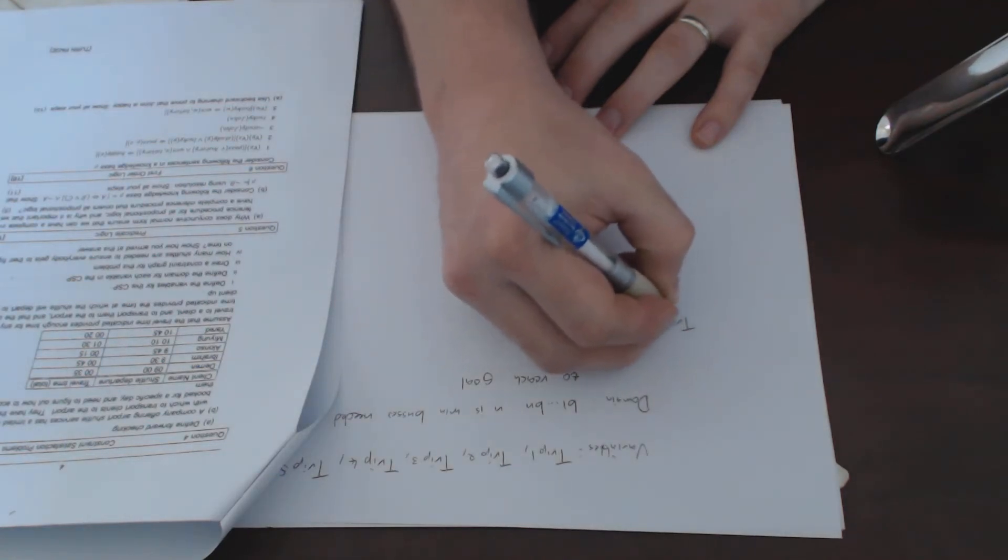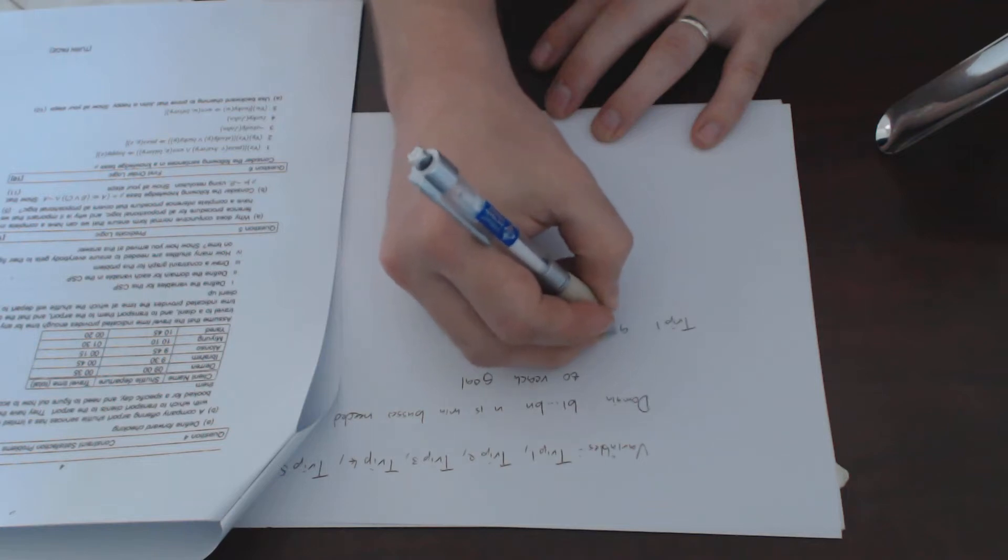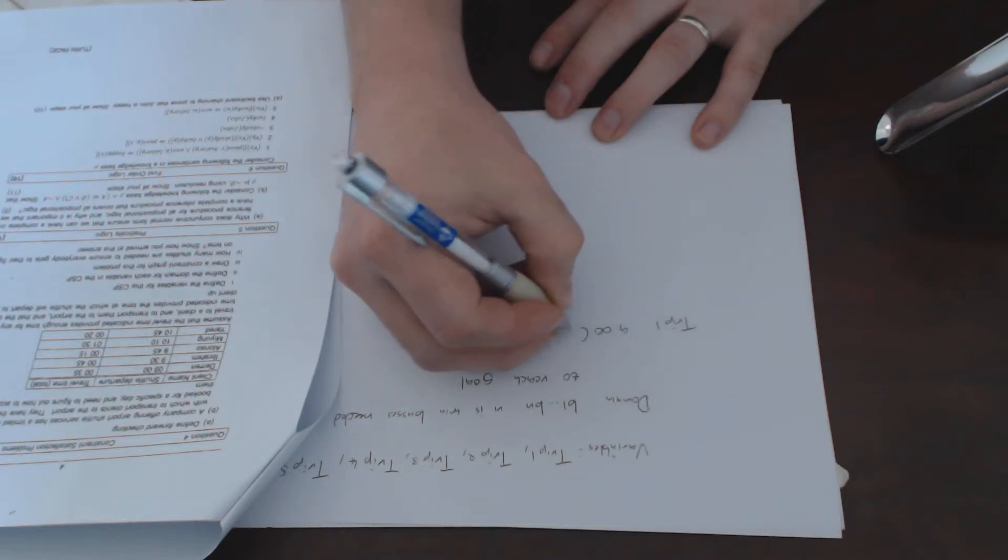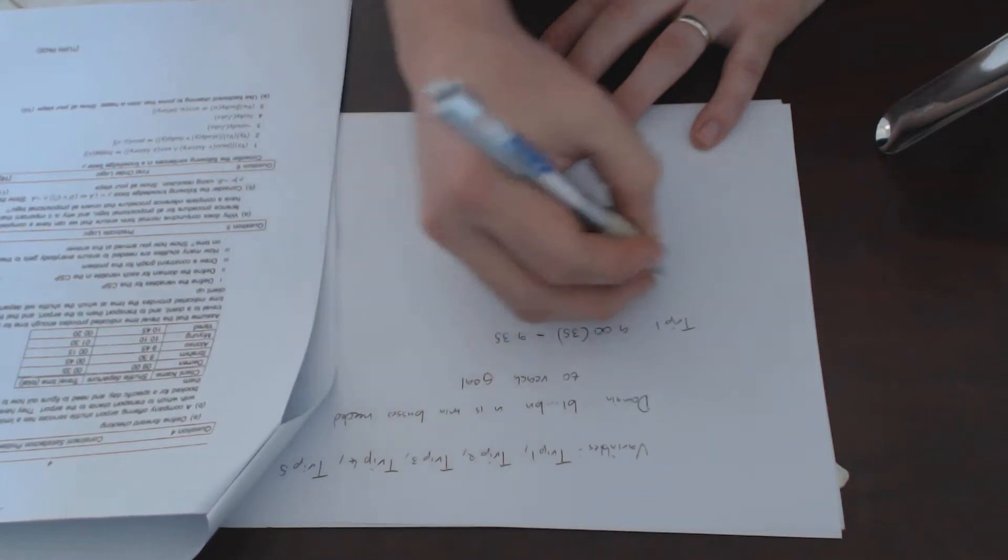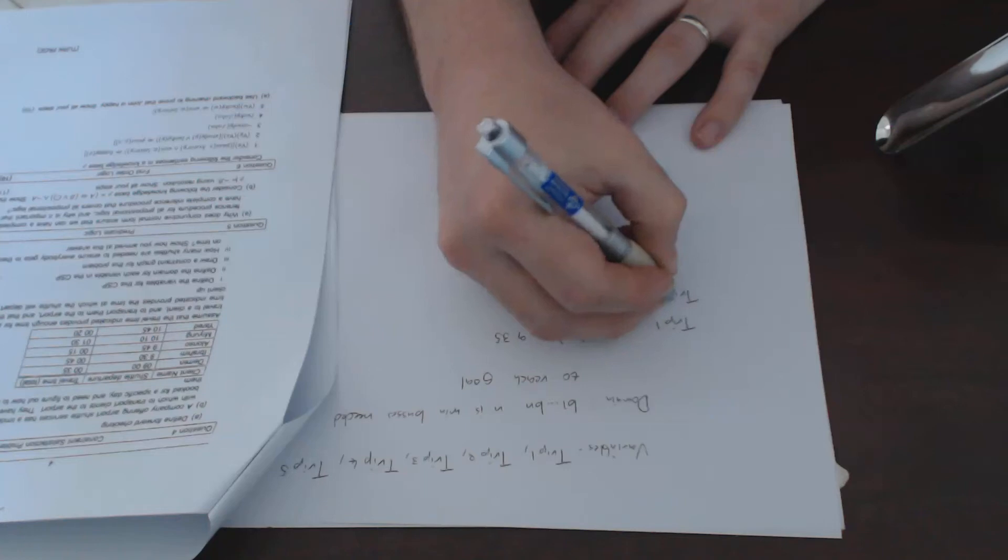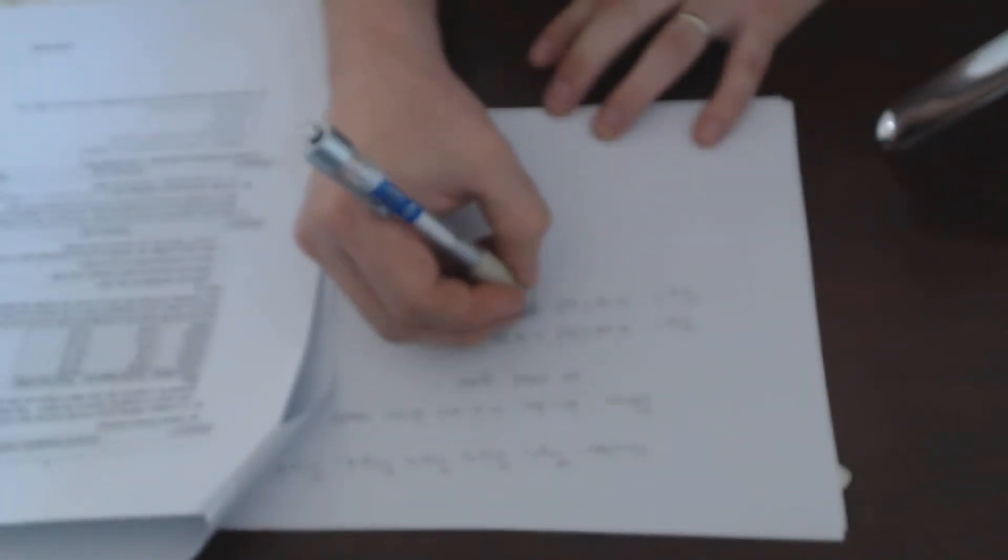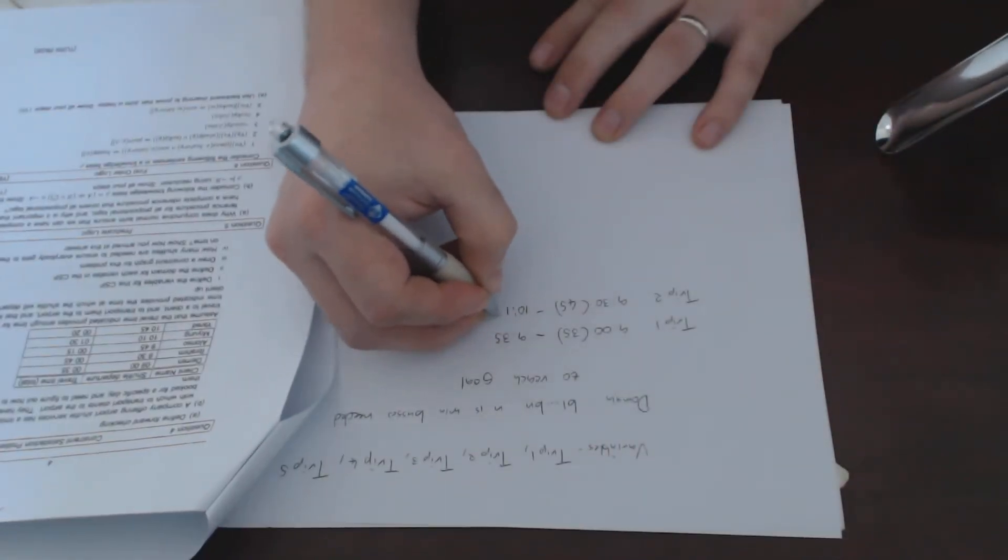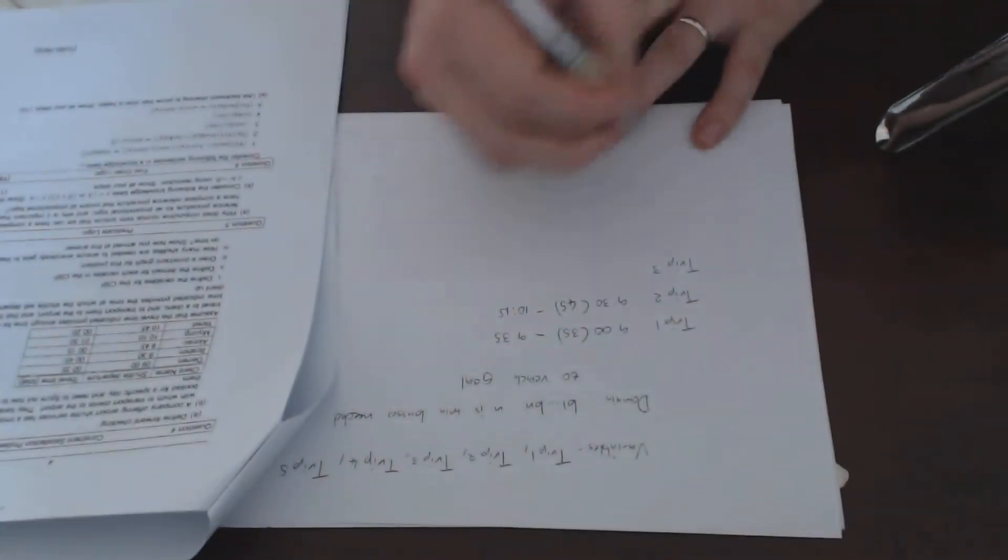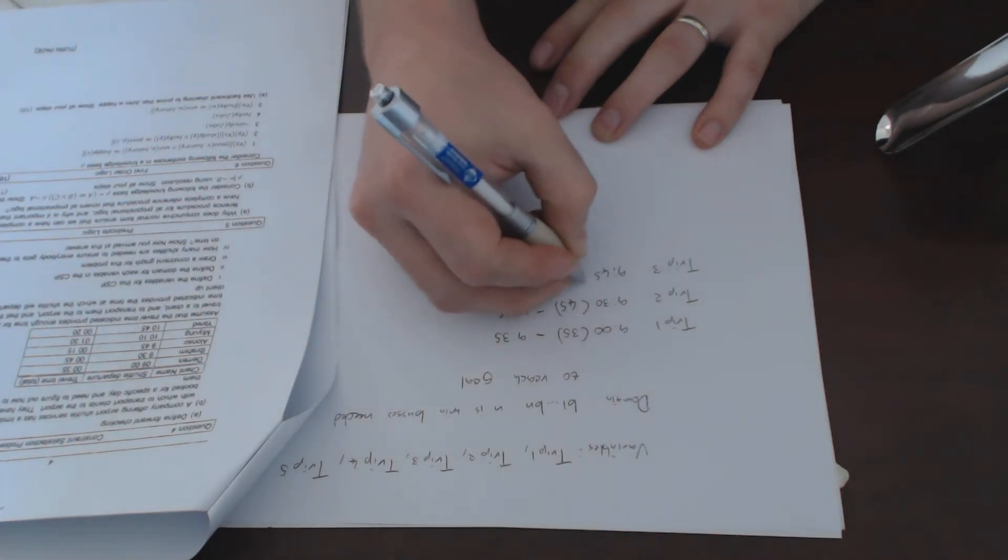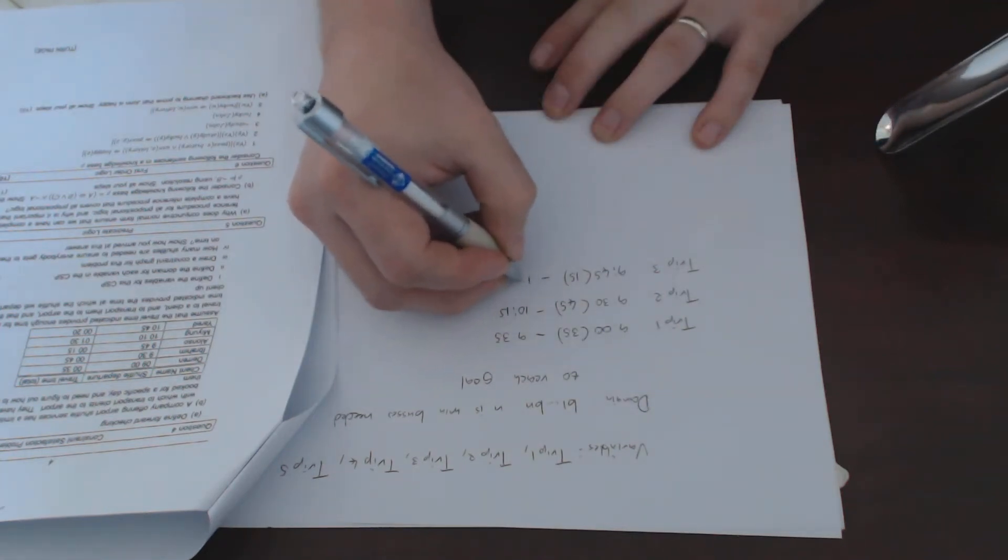Trip1 was from 9, it is a 35 minute trip and that means it will end at 9:35. Trip2 was starting at 9:30, it's a 45 minute trip which means it will end at 10:15. Trip3 starts at 9:45, it's a 15 minute trip which means it ends at 10 o'clock.